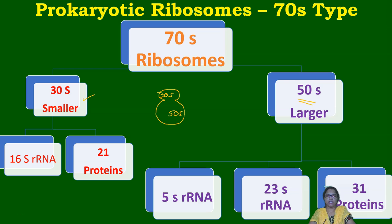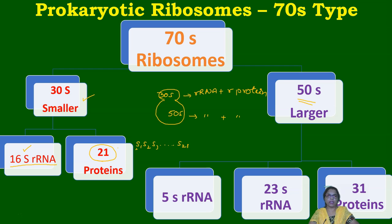Each subunit is made of ribosomal RNA plus ribosomal proteins. In the 30S smaller subunit, one ribosomal RNA is present — which is 16S rRNA — and there are about 21 different ribosomal proteins designated S1 through S21, where 'S' stands for smaller subunit.